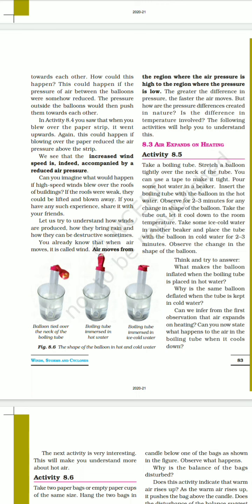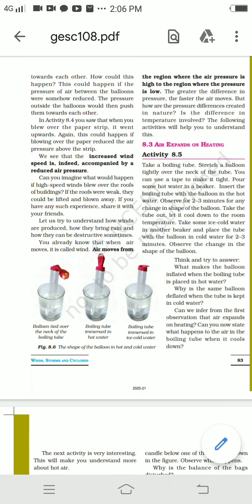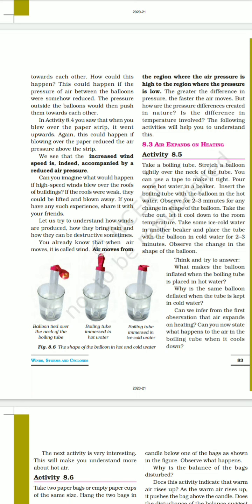Take a boiling tube and stretch a balloon tightly over the neck of the tube, using tape to make it tight. Pour some hot water in a beaker and insert the boiling tube with the balloon in the hot water. Observe for 2–3 minutes for any change in the shape of the balloon. Then let it cool, place it in ice cold water, and again observe the change.